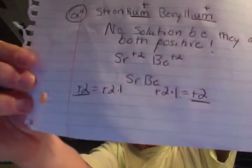But if you didn't remember that, you could always write SR plus two and BE plus two, which would equal SRBE. But when you check it, plus two times one equals plus two for SR, and plus two times one equals plus two for BE. So you know they're both positive, and that also equals no solution.